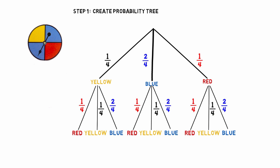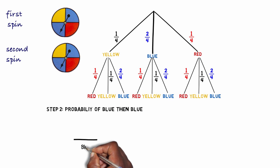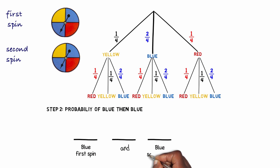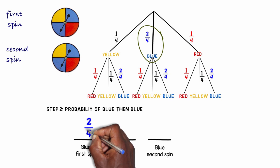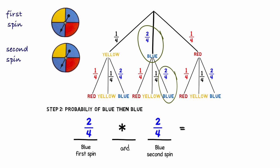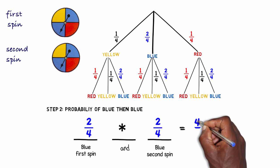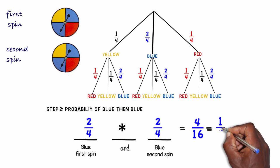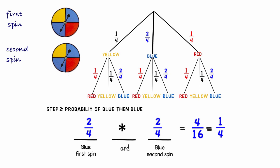Step two asks: what is the probability of landing on blue first and blue a second time? The shortcut is that once you know the probability of one outcome and the probability of the second outcome, you multiply them to find the probability of both occurring. I have a two in four chance of blue followed by a two in four chance of blue, so multiplying gives four out of 16, which simplifies to a one in four chance of that happening.